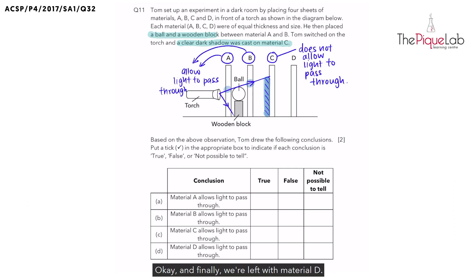Finally, we're left with material D. Material D is placed at a position where it is behind C. So are we able to tell whether light is able to pass through material D? No. I would say that for material D, it is not possible to make a conclusion about its transparency.